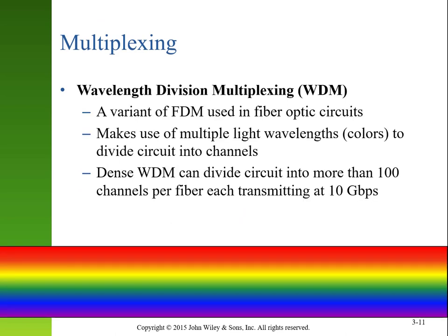If you're dealing with light waves instead of electrical or radio waves, the way you would divide these signals is wavelength division multiplexing — dividing different light wavelengths, or different colors, rather than different frequencies. Dense wavelength division multiplexing can divide a circuit into more than 100 channels per fiber, each transmitting at 10 gigabits per second. So a single small fiber optic cable can broadcast a lot of data to lots of different devices.